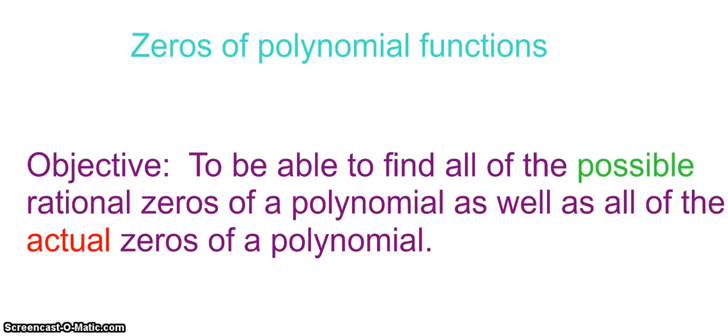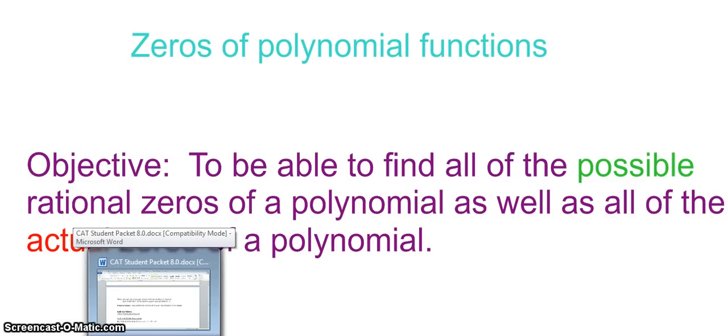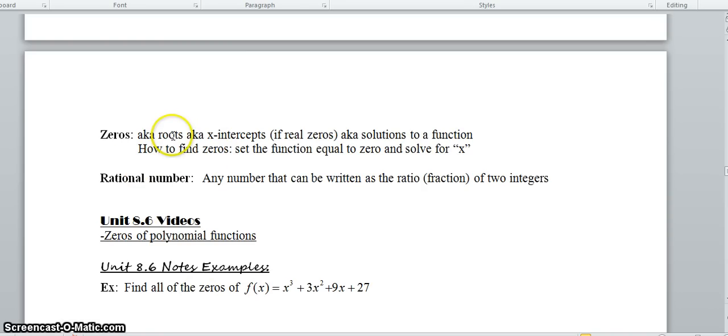First, let's refresh our memories on what are zeros. I want you to look in your packet, right above the first example, and look at the definition of zeros. Zeros are also called roots, x-intercepts (they are only x-intercepts if they're real zeros), and solutions to a function. How do we find the zeros? We set the function equal to 0 and solve for x, because that's how we find x-intercepts.